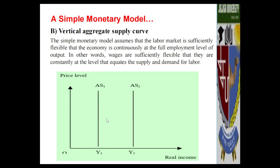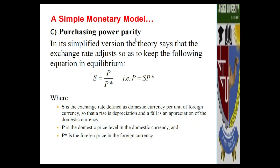The third assumption is purchasing power parity. The simplified version of the theory states that the exchange rate adjusts so as to keep purchasing power in equilibrium. The exchange rate S equals the domestic price P divided by the foreign price P*. Equivalently, the domestic price equals the exchange rate times the foreign price. S is defined as domestic currency per unit of foreign currency, so a rise in S means depreciation and a fall means appreciation of the domestic currency.